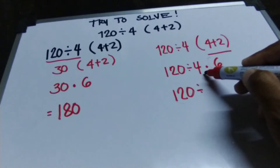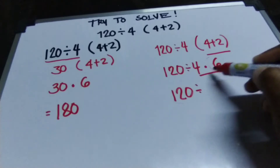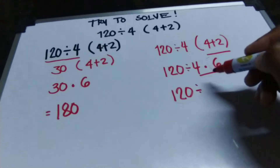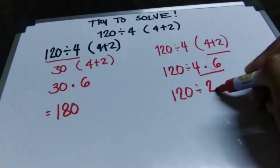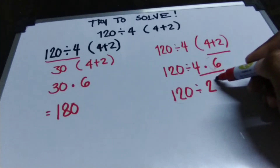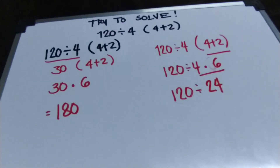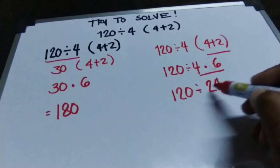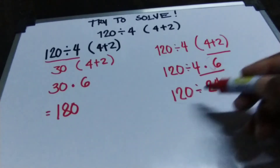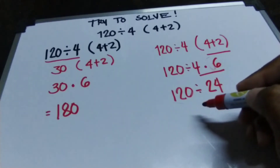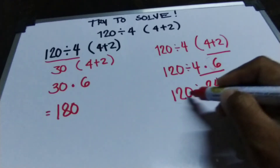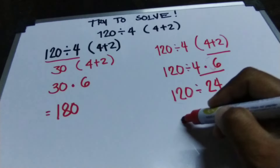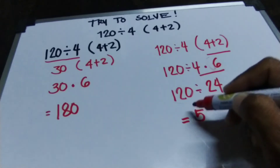Next, we multiply: 4 times 6 is 24. So we have 120 divided by 24. Lastly, 120 divided by 24 is equals to 5.